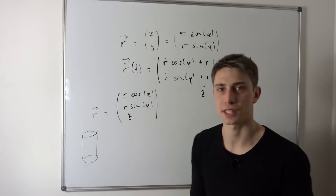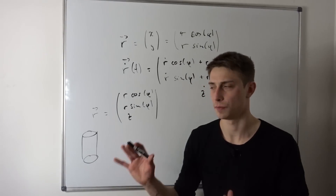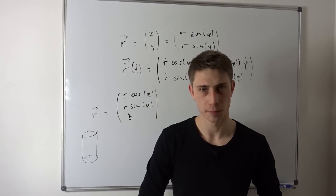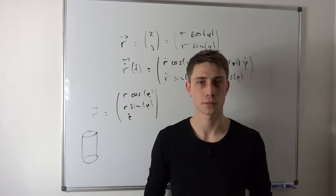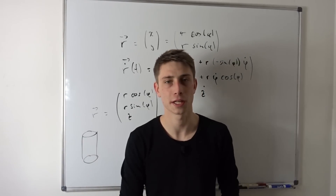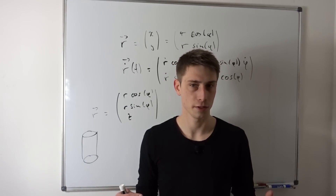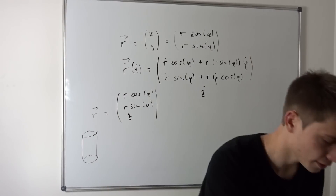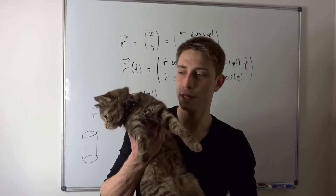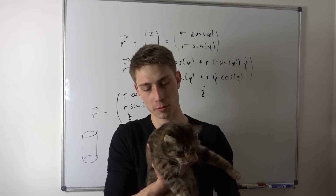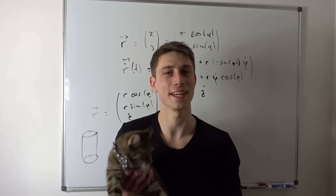We also have spherical coordinates, but I'll discuss those at a later point when we really need them. You can take a look at Wikipedia — it's not too hard to derive, quite some work but not too hard. I hope this helps a little bit. If you enjoyed this video, please like and subscribe, recommend me if you like, and support me on Patreon — link in the description. And until the next video... have a meowful day. What a cute little cat, look at her. Have a flammable day, see ya.